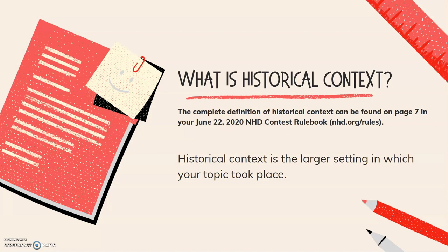Historical context is the larger setting in which your topic takes place. So if your topic is temperance, you'll be looking at the 1820s through the 1840s, or even extending that out if you're going all the way up to prohibition in the 1920s. We need to be thinking about that time period — what else is going on in the 1820s, 1830s, 1840s? Do we see overlaps with the abolitionist movement? Do we see overlaps with women's suffrage? What else is going on in the climate of the United States that is going to have an impact on the temperance movement? The complete definition of historical context can be found on page 7 in your NHD Contest Rule Book, which you can download at nhd.org/rules.